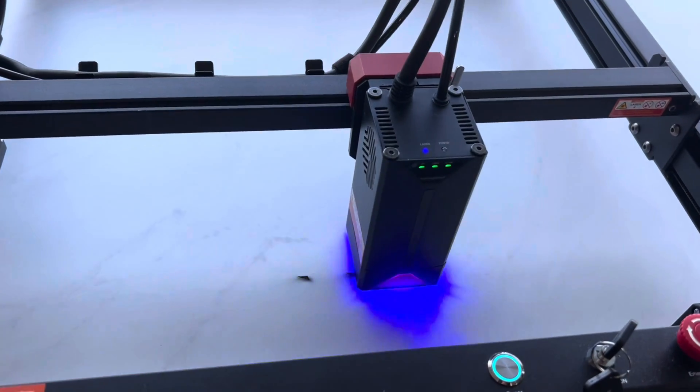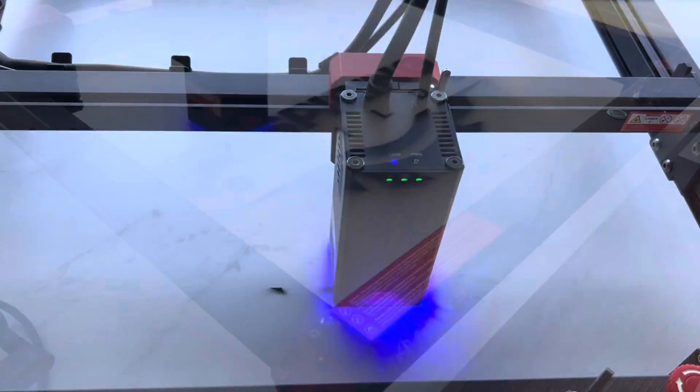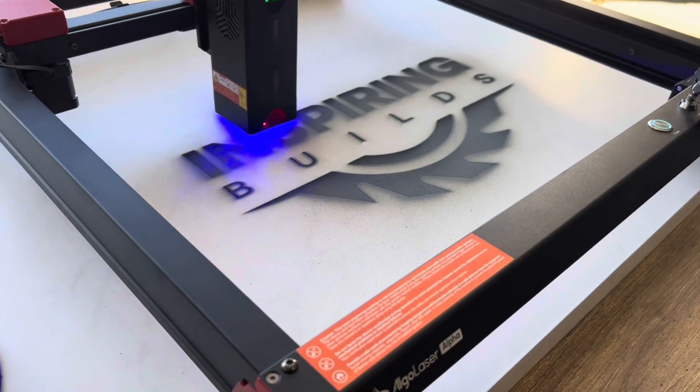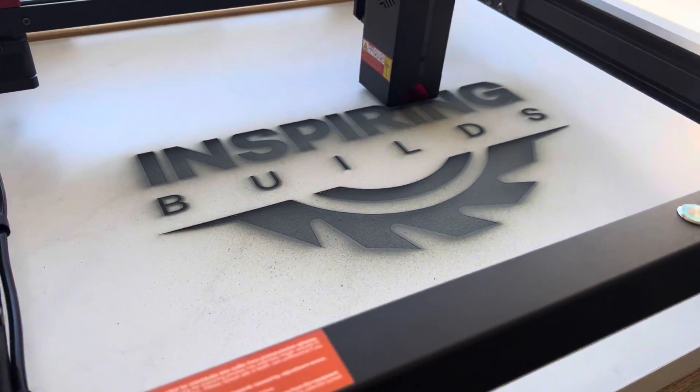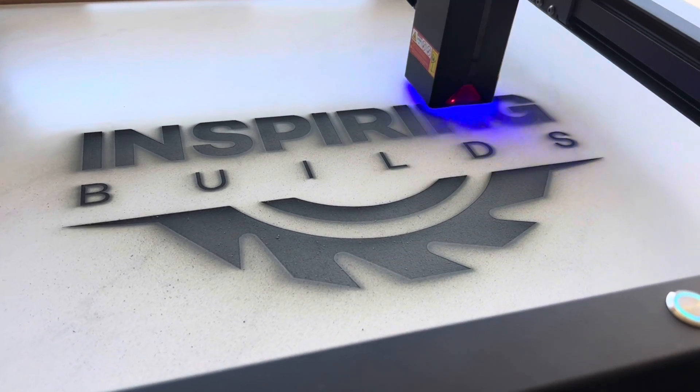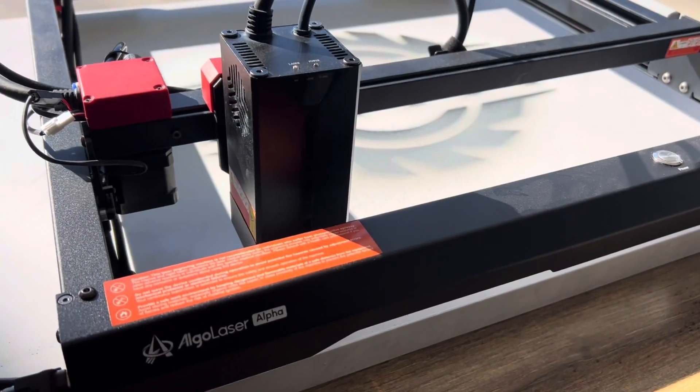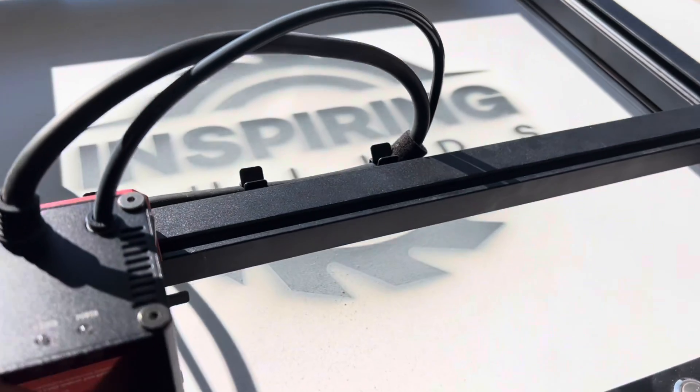I really wanted to test the engraving on this machine and see what it could do on a larger project. Ventilation is key for engravers especially longer run times. With the material being white the soot was much more visible. I cleaned it with compressed air and white vinegar.